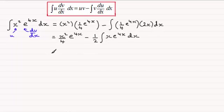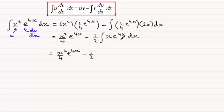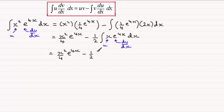On the next line, copy that first term out again: x squared over 4, e to the power 4x. Now we've got minus a half, and this integral to cope with. What we've got here is essentially the type handled in the first video — it's still integration by parts. So we'd have to do it all over again. Let the x be u, and let e to the power 4x be dv by dx.